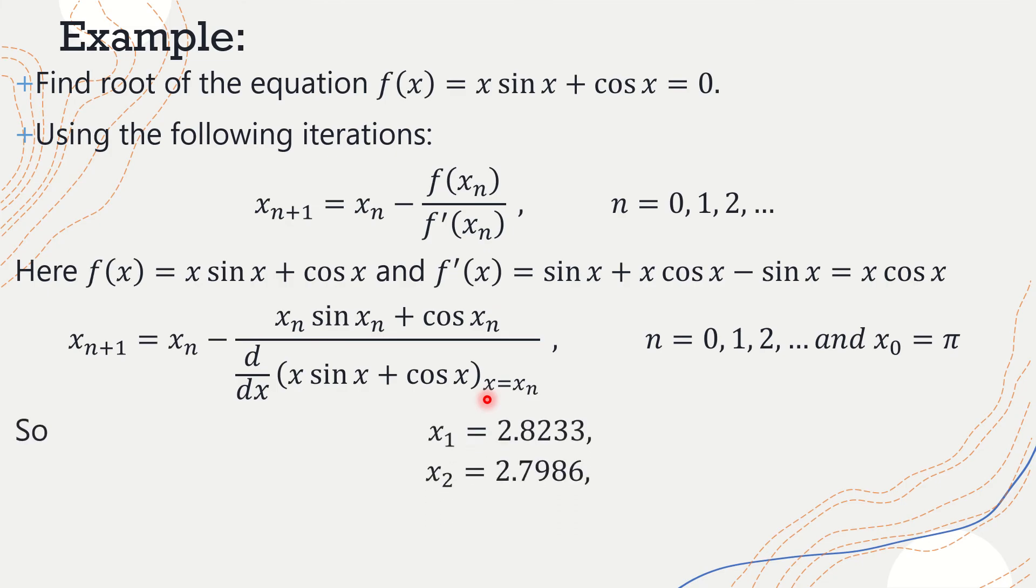The next value would be 2.7986. I'll just do that by using calculator. And then x₃ will be 2.7984. You see that the root is already converged in fourth iteration up to 4 decimal places.